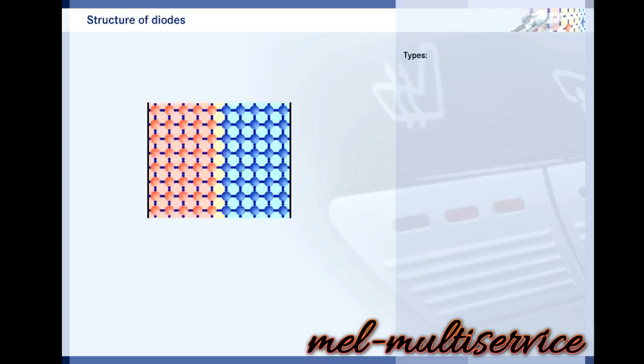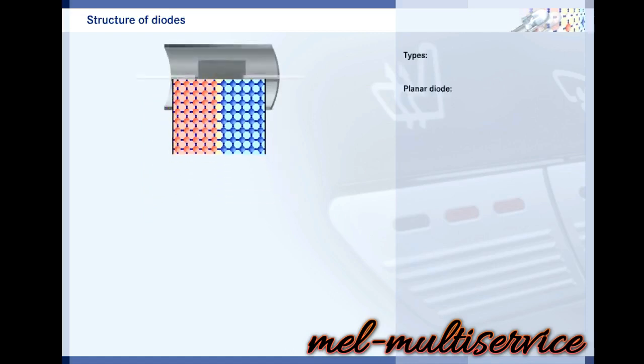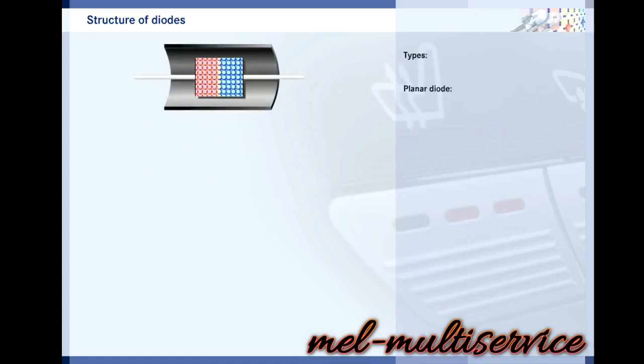At the heart of a diode lies a semiconductor crystal, which consists of an n-type region and a p-type region. Planar diodes consist of one thin plate of n-type silicon and one of p-type silicon. They are enclosed in a housing and have wire connections. These diodes are mainly used as rectifiers because the extensive p-n junction allows high currents. The terminal connected to the n-type region is called the cathode of the diode. The terminal connected to the p-type region is called the anode.